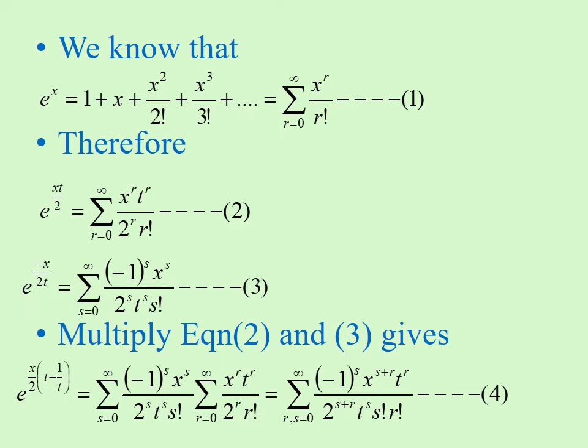Now we multiply equation 2 and equation 3, and we get: summation s is equal to 0 to infinity of minus 1 whole power s times x power s divided by 2 power s times t power s times s factorial, into summation r is equal to 0 to infinity of x power r times t power r divided by 2 power r times r factorial.